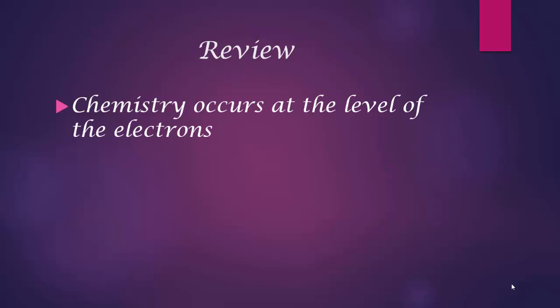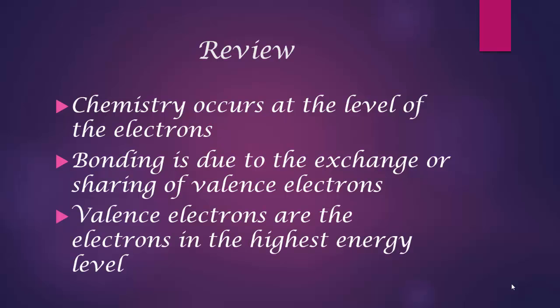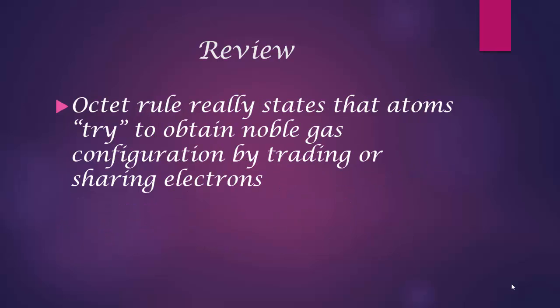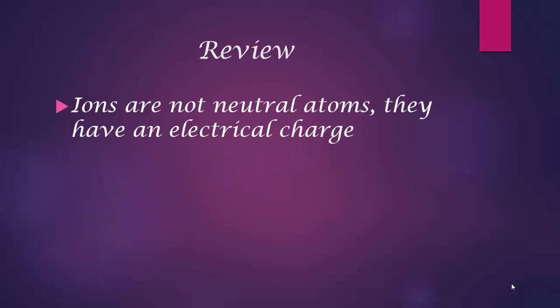So to review the basics, chemistry occurs at the level of the electrons. Bonding is due to the exchange or sharing of valence electrons in order to make new compounds. Remember that valence electrons are the electrons in the highest energy level. The octet rule really states that atoms try to attain noble gas configuration by either trading or sharing electrons. Ions are formed when an atom gains or loses electrons.